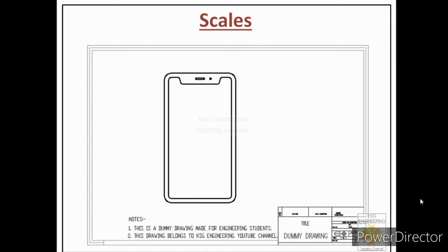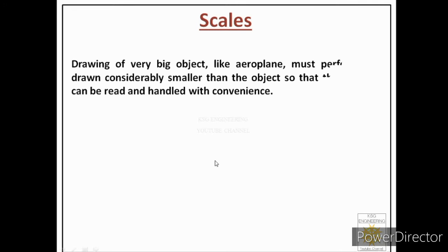In this slide, the drawing of a cell phone is shown. If we want to draw a cell phone, whatever original dimensions the cell phone has, we can use those dimensions directly. Suppose the length of the cell phone is 5 centimeters and the height is 15 centimeters — we can easily draw these on a piece of paper. For such objects like a mobile phone, we can use original dimensions while drawing different views.